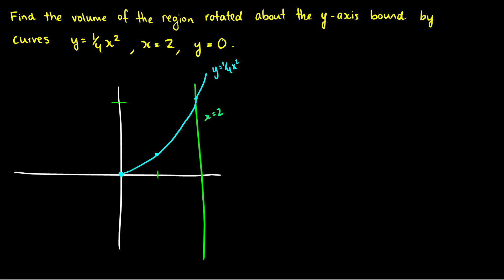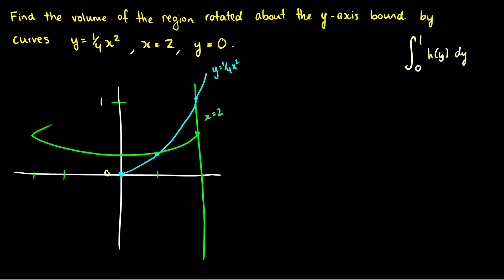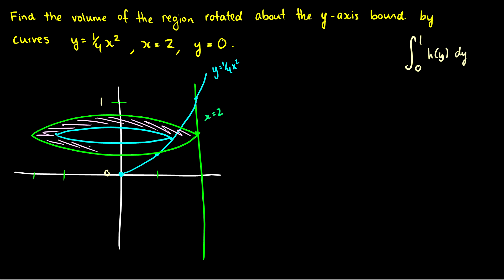Since we're rotating about the y-axis, we're going to be integrating from zero to one — it will be something like ∫₀¹ h(y) dy. What's being rotated is the area between x = 2 and the curve y = (1/4)x². Drawing a circle at some height, we have an outer circle from x = 2 and an inner circle from the parabola, and we're looking for the area between the two — the washer.